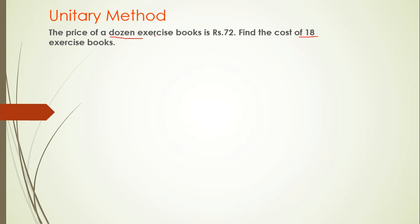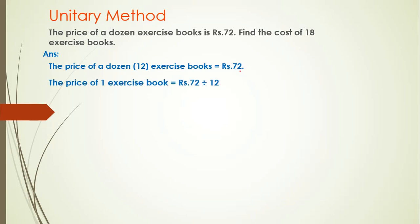To find the cost of 18 books, first we need to find the cost of one exercise book, then we need to multiply with the number 18. So let's find the cost of one book first. What they are given: the price of a dozen, means 12 exercise books, equals rupees 72.